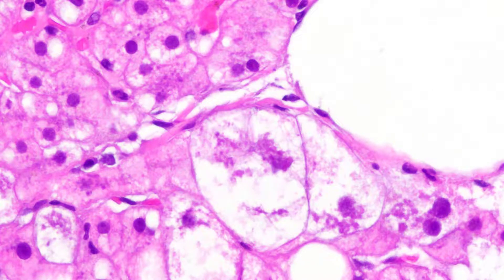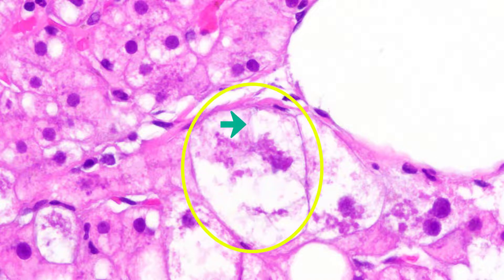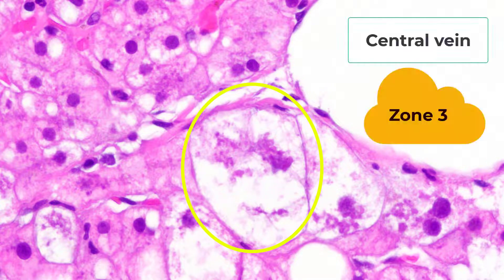Here's a classic balloon cell. It's enlarged, and they often have these distinct cytoplasmic membranes. There's the cytoplasmic condensation, the spidery processes, and the clearing. One additional helpful feature: balloon cells in steatohepatitis are typically located adjacent to the central vein in the zone 3 region — and there is the central vein.